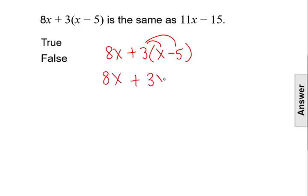So that'll be 3x minus 15. We then can combine the like terms of 8x plus 3x by adding their coefficients of 8 and 3. 8 plus 3 would be 11 and then still that variable of x.